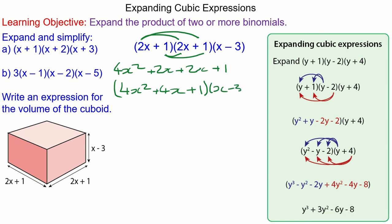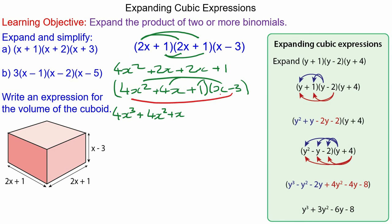So we'll do x times 4x squared which is 4x cubed, x times 4x is 4x squared, and x times 1 is x. Then the negative 3 times 4x squared which is minus 12x squared, times 4x which gives minus 12x, and times 1 which gives negative 3.